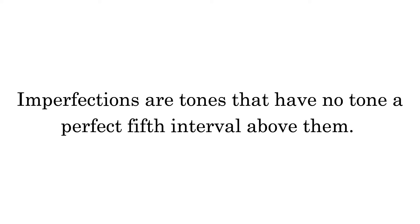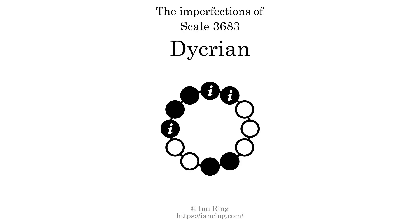Imperfections are tones that have no tone a perfect fifth interval above them. This scale has 3 imperfections. They are at positions here, here, here, and here.